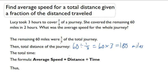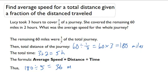The total time: 3 plus 2 equals 5 hours. Now I can do average speed. Average speed equals distance divided by time, so 180 divided by 5, which is 36 miles per hour.